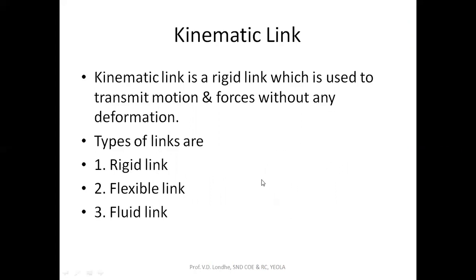There are three types of links: one is rigid link, another one is flexible link, and the third one is fluid link. A rigid link is the same as a kinematic link — it is a rigid member used to transmit motion and forces without any deformation. A flexible link is also used to transmit motion and forces, but in this link there will be some deformation. After completing its operation, however, it can regain its original position.